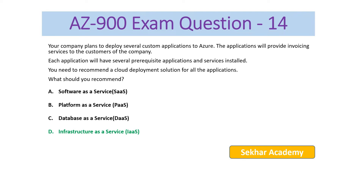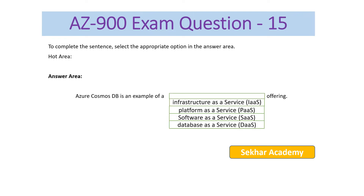AZ-900 exam question number 15: to complete this sentence, select the appropriate option in the answer area. The statement is: Azure Cosmos DB is an example of a blank offering. Options are: infrastructure as a service, platform as a service, software as a service, or database as a service. Azure Cosmos DB is fully managed by platform as a service, so the right answer is platform as a service.